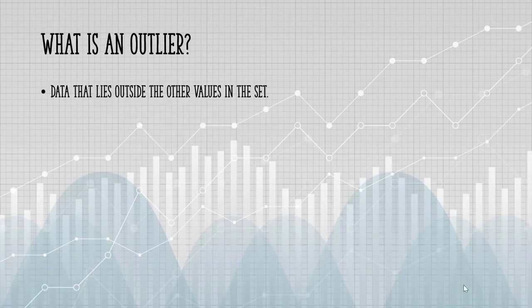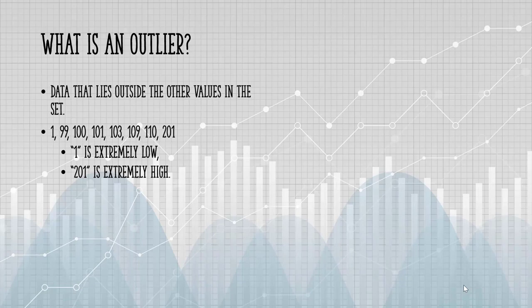An outlier is outside the other values in the set. For example, in this set of numbers, 1 is an outlier because it's very low, and 201 is an outlier because it's extremely high.